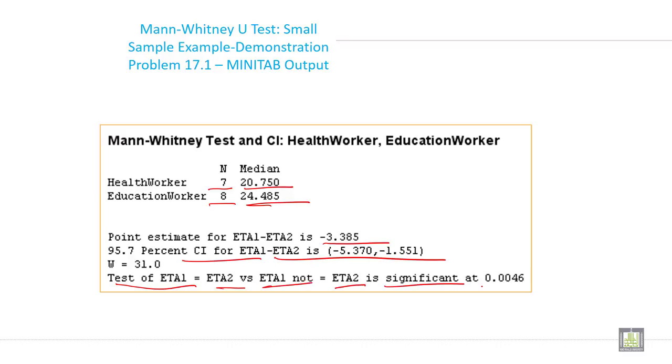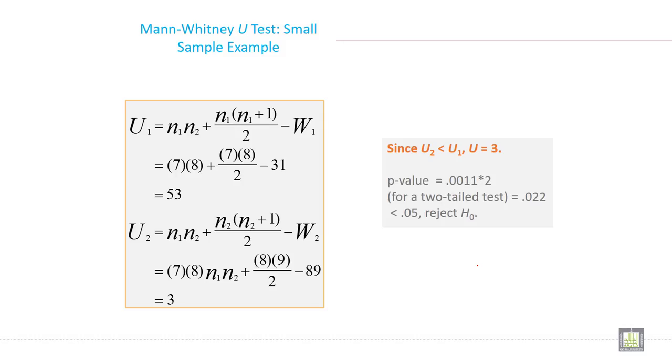Now the small sample formula for Mann-Whitney U test. This is the manual formula. If you want to calculate manually, the formula U1 equals n1 times n2 plus n1 times n1 plus 1 divided by 2 minus W1, and this is the formula for U2.